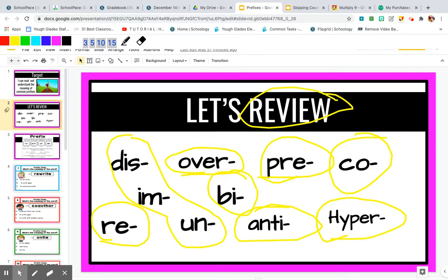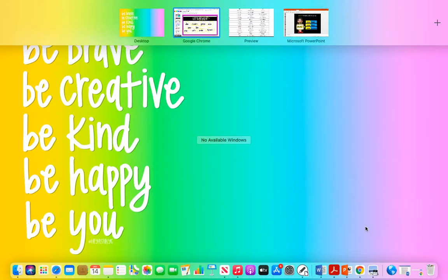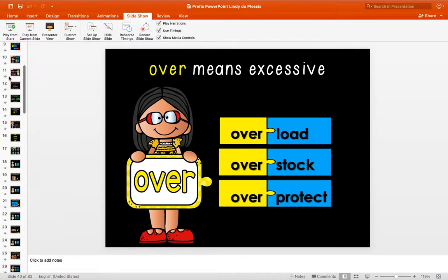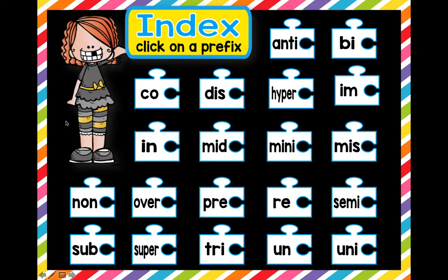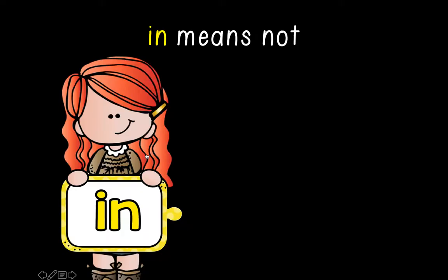We're going to add five more prefixes today. We learned anti, bi, co, dis, hyper, and im last week. This week we're going to learn in, mid, mini, miss, and non. Let's get started. In is a prefix that can be added to a root word and it means not.